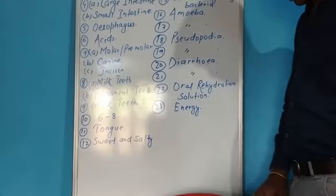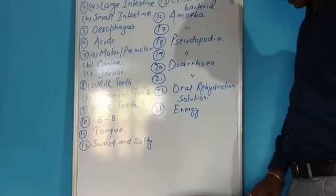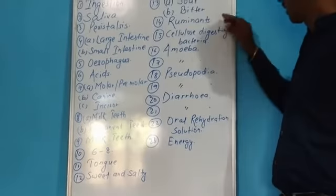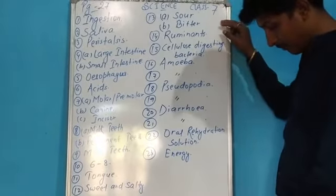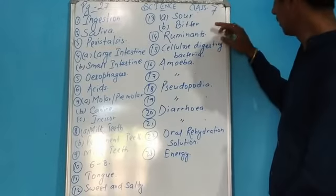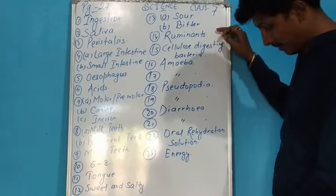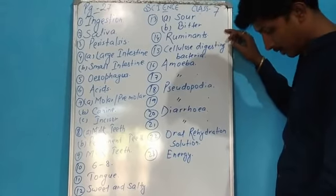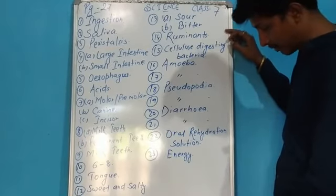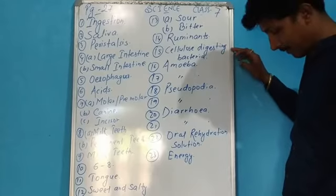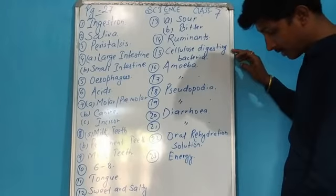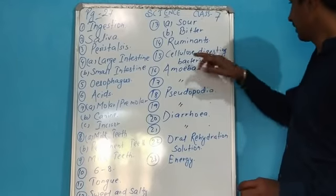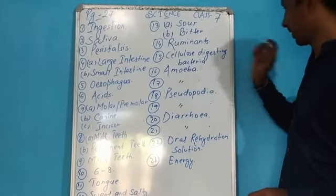Number twelve: which two tastes can be detected by the front part of the tongue? Sweet and salty. Number thirteen A: which taste of food can be detected by the sides of the tongue? That is sour. And number B: by the back part of the tongue? Bitter. Number fourteen: what is the special name of the animal which can chew the cud? Ruminants. Number fifteen: whatever microorganisms digest cellulose, the carbohydrate present in the grass food of a ruminant — those are cellulose-digesting bacteria.